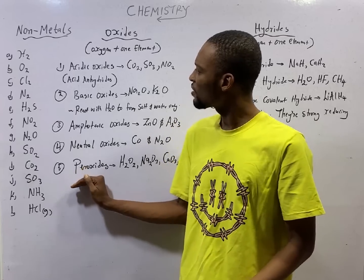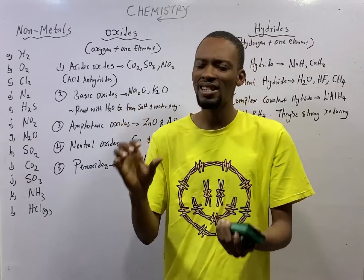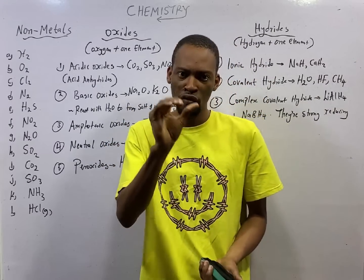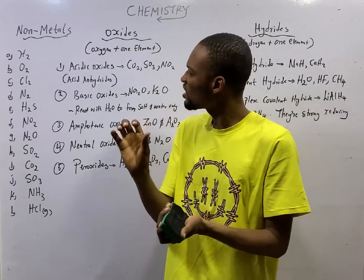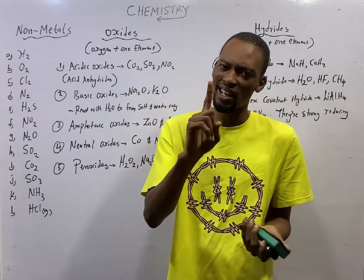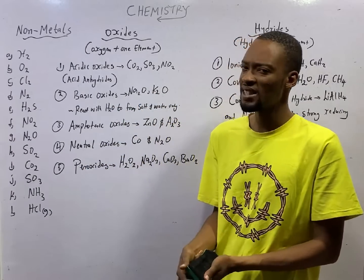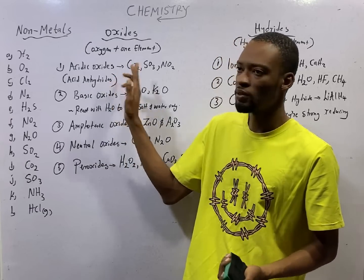We have five types of oxides. The first one is acidic oxides. Acidic oxides are oxides of non-metals. Which means when oxygen reacts with a non-metal, we form acidic oxides. Examples of acidic oxides are carbon-4 oxide, oxygen with carbon, a non-metal.